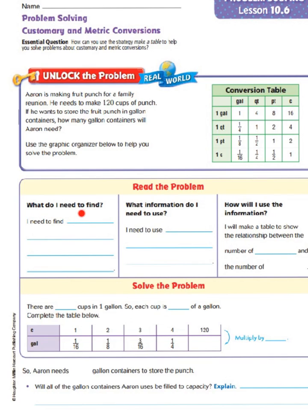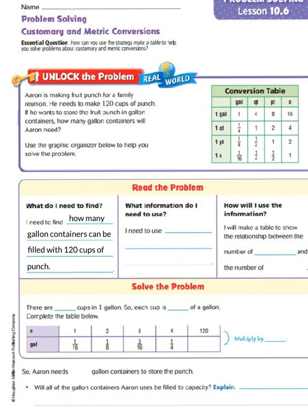What do I need to find? I need to find how many gallon containers will Aaron need. To repeat, I need to find how many gallon containers can be filled with 120 cups of punch. Next, we're going to look at what information do I need to use?